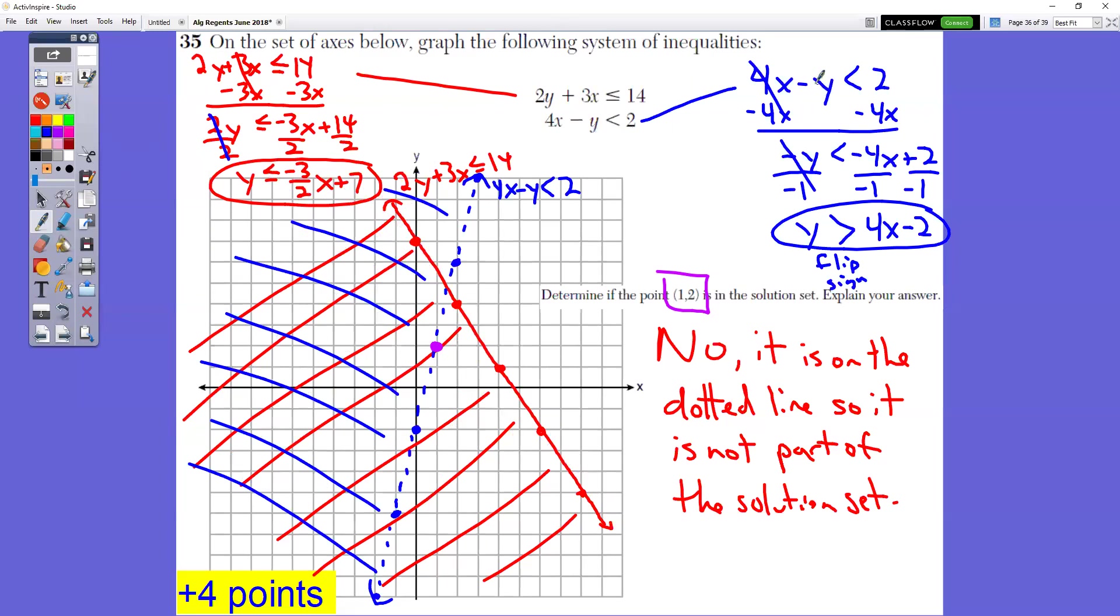For the second equation, we're trying to get this y all by itself. So we would do minus 4x on both sides. Bring down your negative y. Bring down your less than symbol. 2 minus 4x. We can't do a plain number minus a letter, but we can switch around the order to be negative 4x plus 2. This is really a negative 1 in front of that y. So we want to divide by negative 1 on all parts. Now be very careful. Please remember that when you divide by a negative number, you have to flip the sign. So this less than changes into greater than. Negative 4 divided by negative 1 is a positive 4. 2 divided by negative 1 is negative 2. So that's our equation. Greater than would be a dotted line when you go to graph it, and we're shading above.